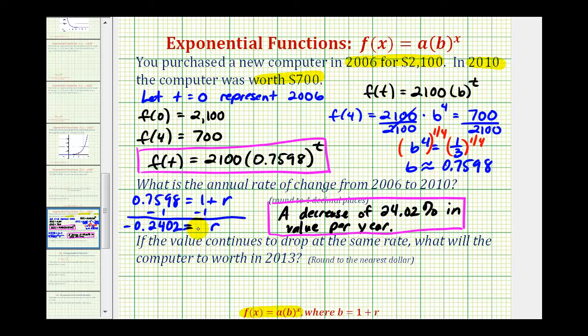Next we're asked, if the value continues to drop at the same rate, what will the computer be worth in the year 2013? So the first step here is to determine what would be the value of t for the year 2013. Well t is equal to the desired year of 2013 minus the base year of 2006. This is equal to seven.